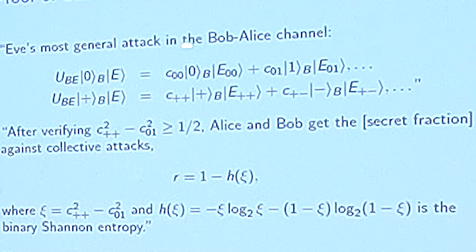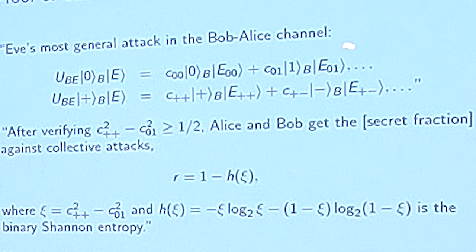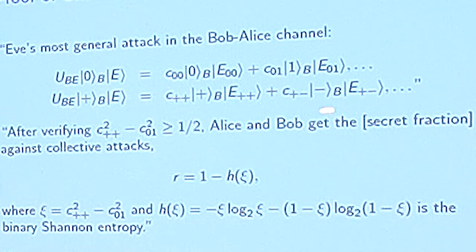What we have is just the first term in the rectilinear basis and in the diagonal basis here. And after some calculations, Alice and Bob can get the secret fraction expressed in this way, where the H here is the Shannon entropy defined as usual.